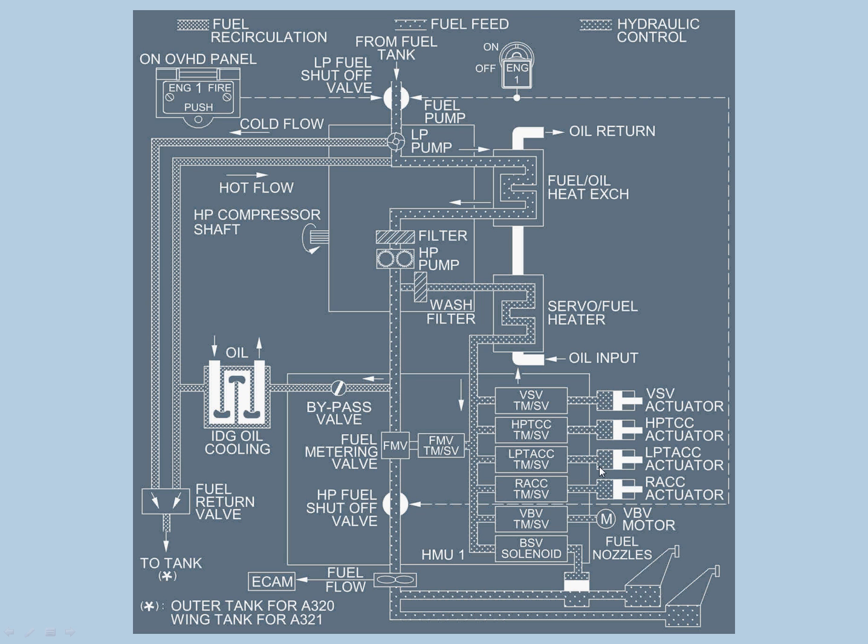The HMU controls these motors and actuators. Rotor active clearance control is the clearance between the rotor blades of the HP compressor and its stator case. VBV is variable bleed valves. These systems help maintain speed. In case the engine is over speeding, this bypass valve opens and the fuel is drawn out and sent back to the tank to avoid damage.